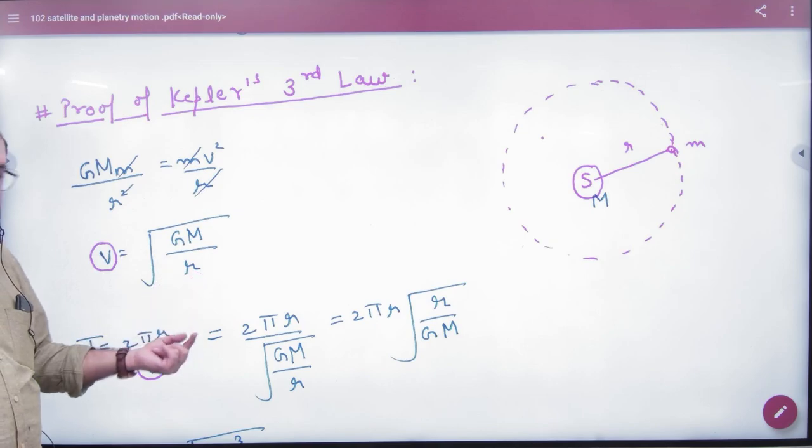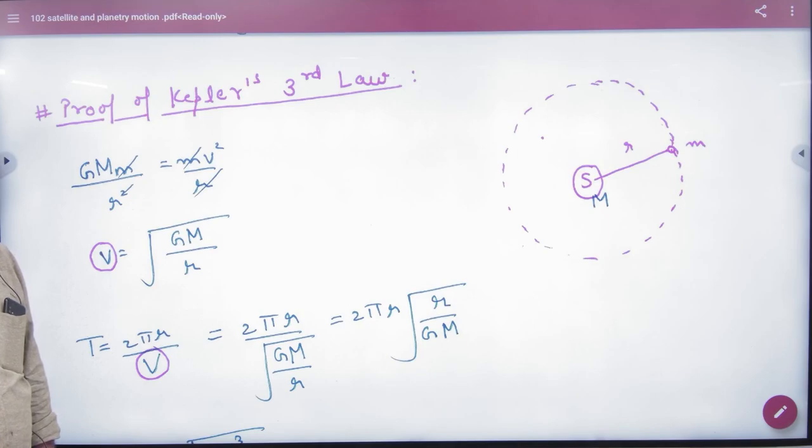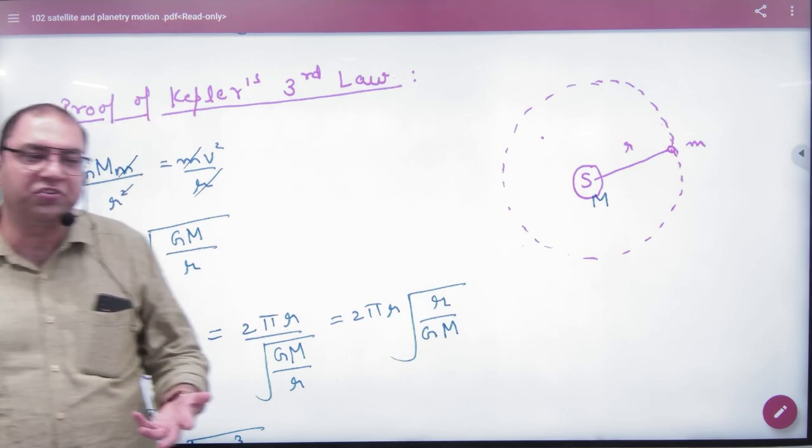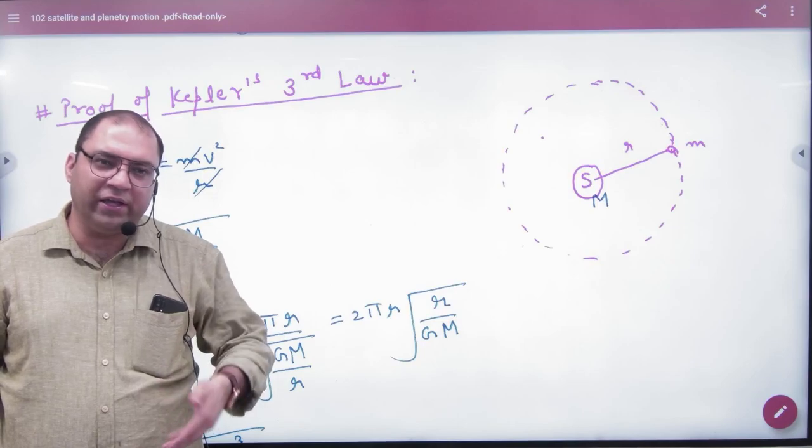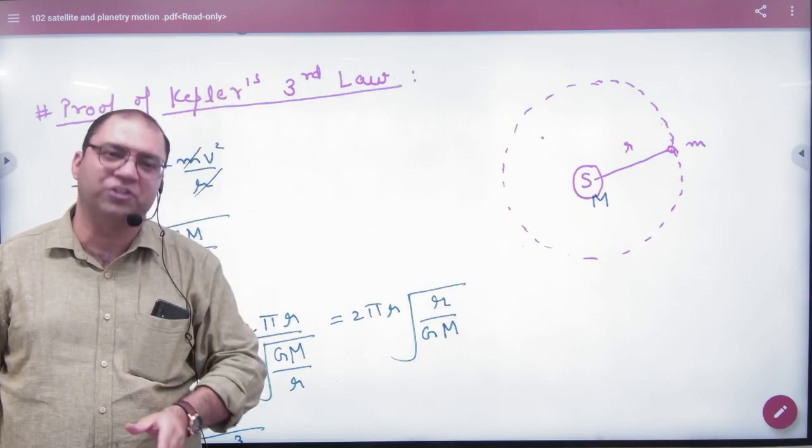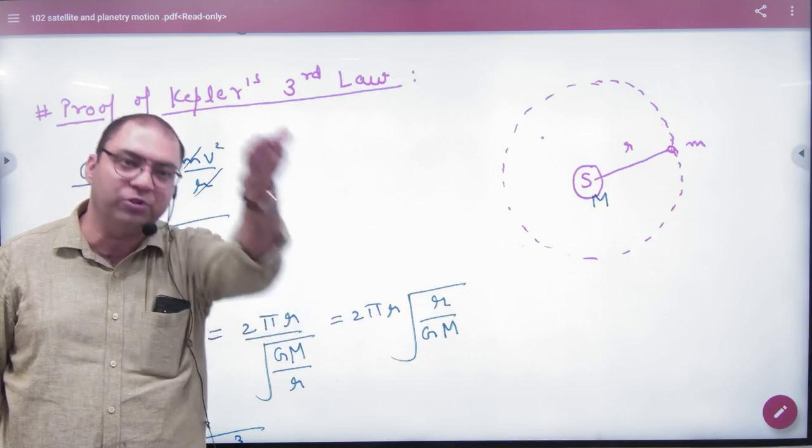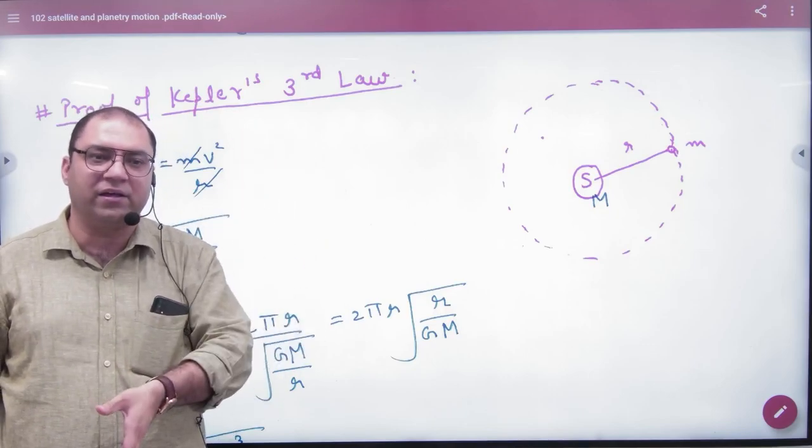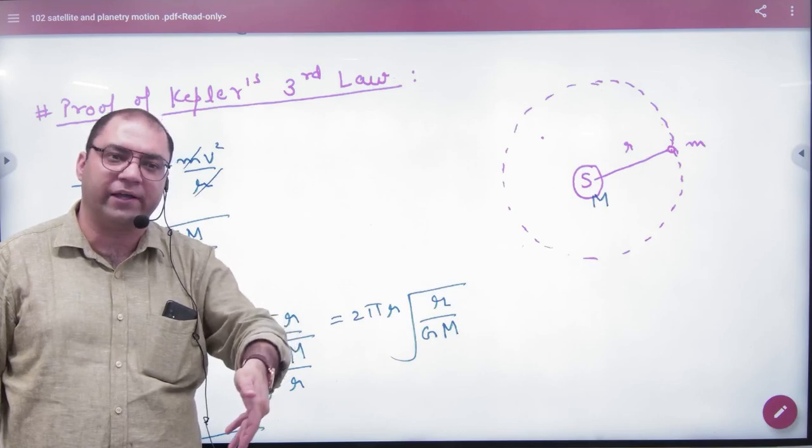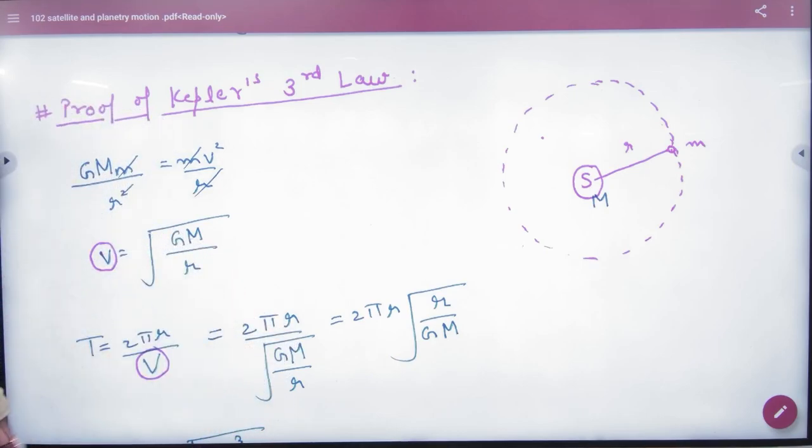This velocity - what is that velocity? Which velocity is it? It is orbital velocity. The satellite's orbital velocity has the same formula. Earth's artificial satellites have the same orbital velocity - same phenomena. So this is the orbital velocity. Yes, the difference is that capital R versus small r.